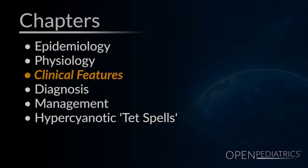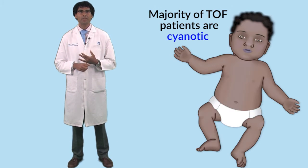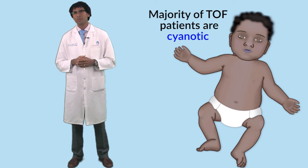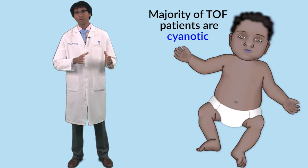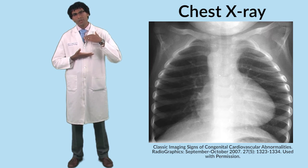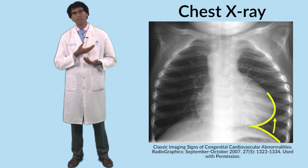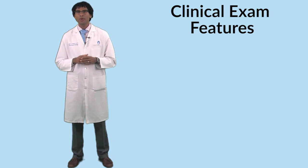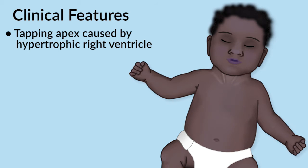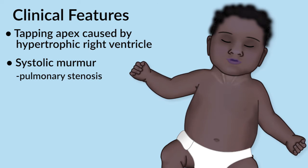Clinical Features. Features that might make you think that a patient you are seeing with cyanosis — cardiac in origin — has tetralogy are the following. Patients with tetralogy are typically cyanotic and relatively comfortable. The majority of patients with tetralogy are blue and not pink. There are chest X-ray features that suggest tetralogy: a boot-shaped heart with the apex lifted off the diaphragm. Tetralogy can sometimes be associated with a tapping apex as a result of the hypertrophic right ventricle, and there is a systolic murmur of pulmonary stenosis.